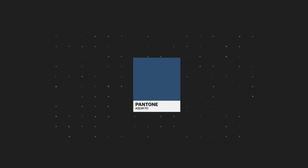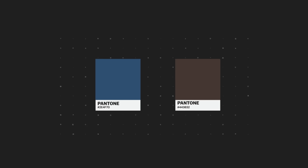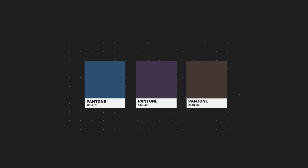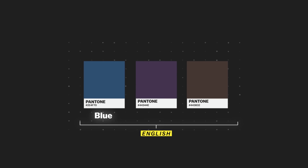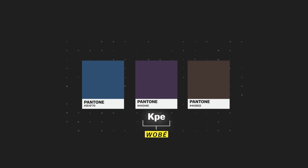If I showed you this paint chip and asked you to tell me what color it is, what would you say? How about this one? And this one? You probably said blue, purple, and brown. But if your native language is Wobbe from Côte d'Ivoire, you probably would have used one word for all three.